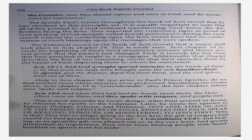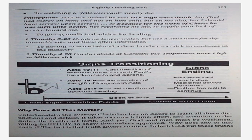Paul went from healing people with handkerchiefs or aprons from his body to the following three things. Number one: to watching a fellow servant nearly die — Philippians 2:27: For indeed he was sick nigh unto death, but God had mercy on him and not on him only, but on me also, lest I should have sorrow upon sorrow. Verse 30: because for the work of Christ he was nigh unto death, not regarding his life to supply your lack of service toward me. Number two: to giving medical advice for healing — 1 Timothy 5:23: Drink no longer water, but use a little wine for thy stomach's sake and thine often infirmities. Number three: to having to leave behind a dear brother too sick to continue in the ministry — 2 Timothy 4:20: Erastus abode at Corinth, but Trophimus have I left at Miletum sick.